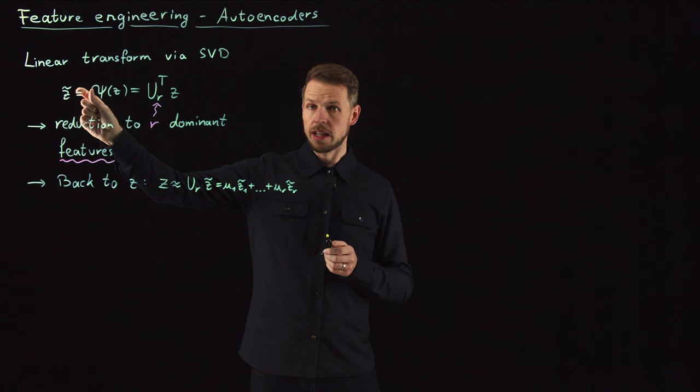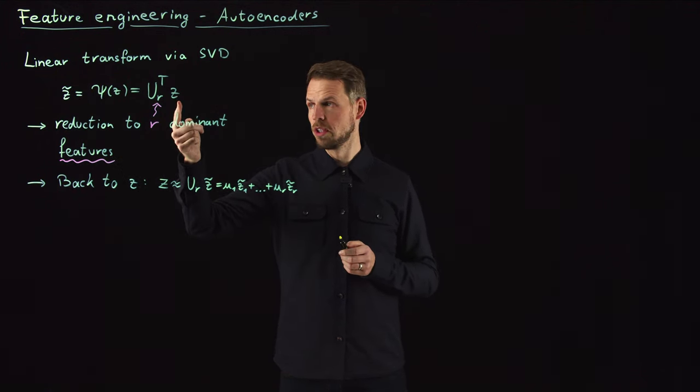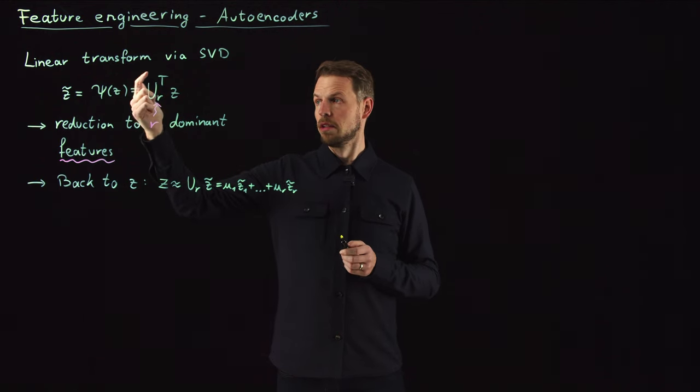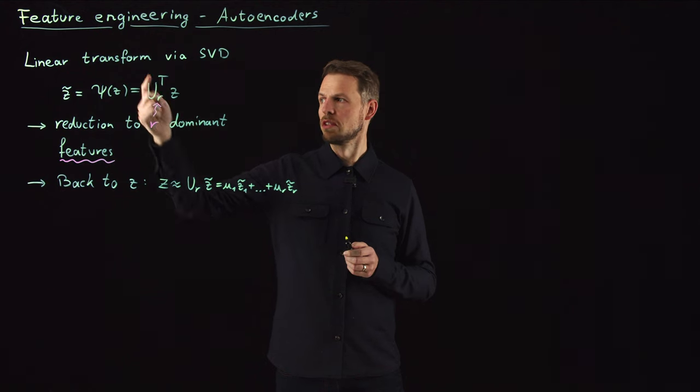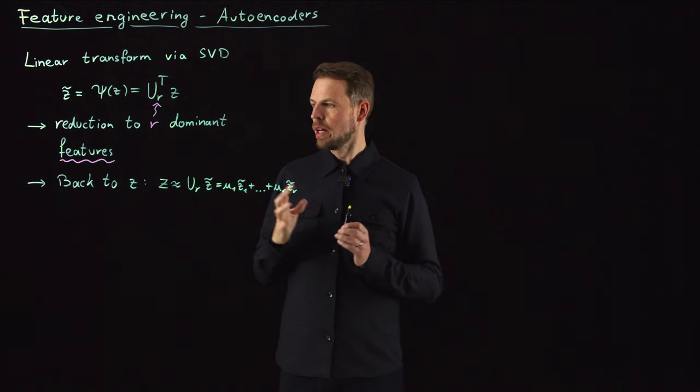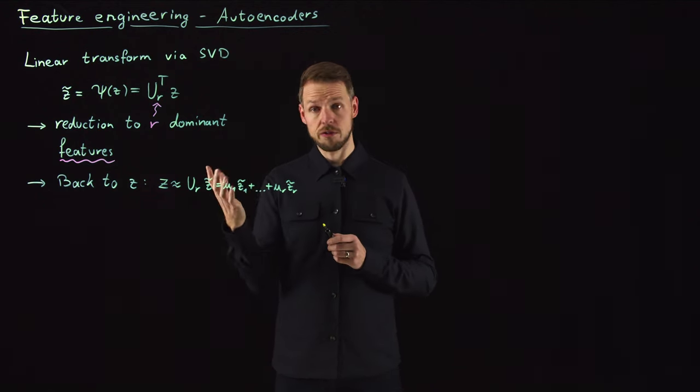The features that we extracted, Z tilde, was just the projection of our input Z onto these coordinates. It's always the inner product between the i-th vector times the vector Z that gives us the i-th component in our feature vector. If you then want to go back, you do the reverse.